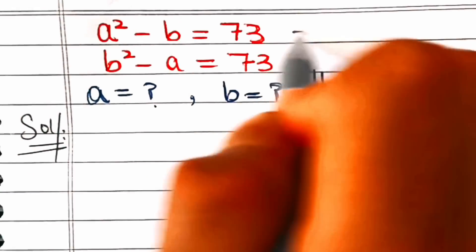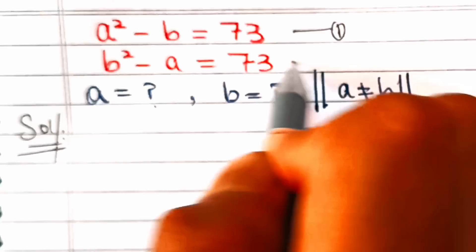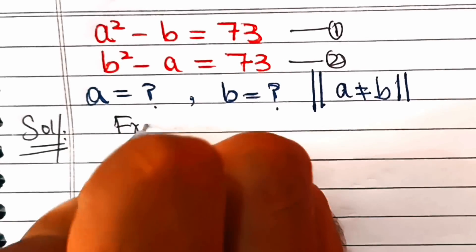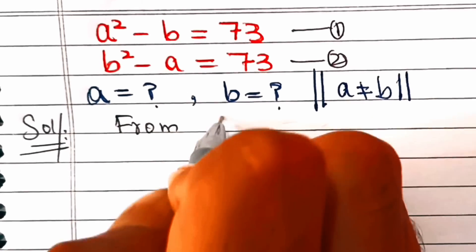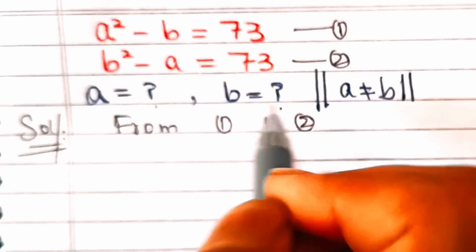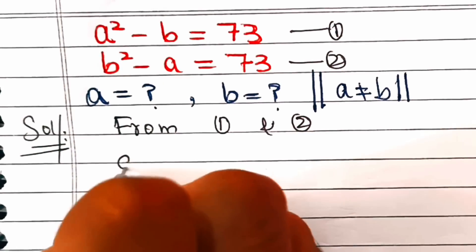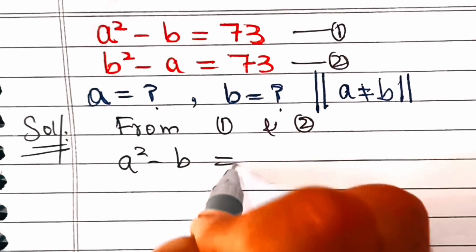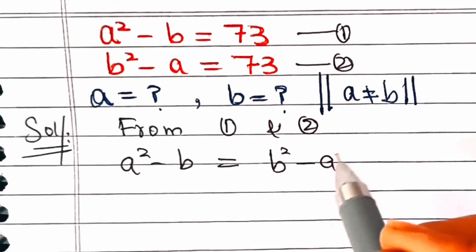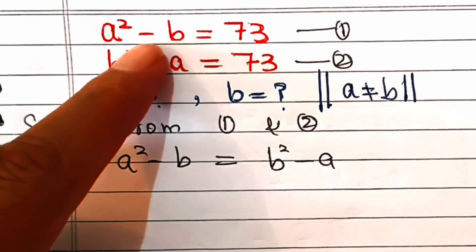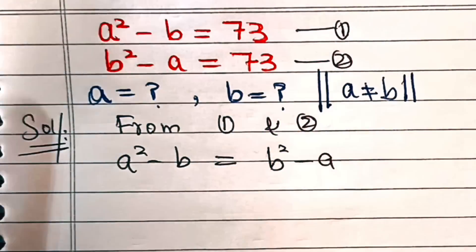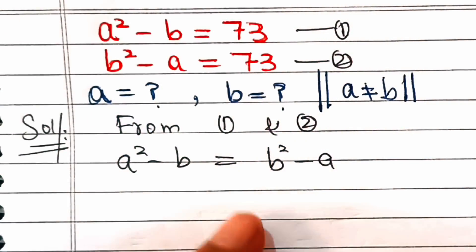Let's call this equation number 1 and this equation number 2. From equations 1 and 2, we have a squared minus b equal to b squared minus a, because both expressions equal 73.